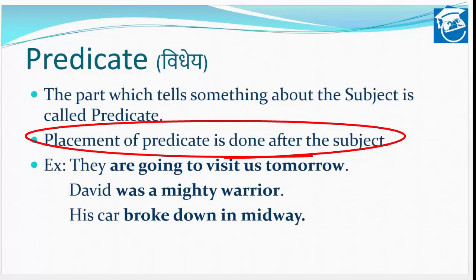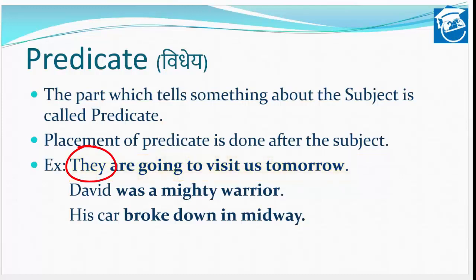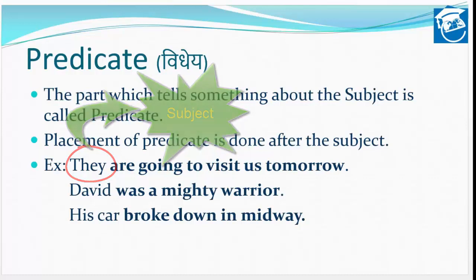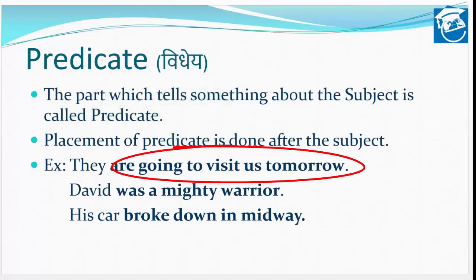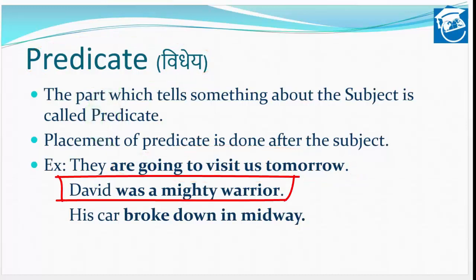Placement of predicate is done after the subject, aur 90% of the time jab bhi predicate lagaenge English ke sentence mein, use hum subject ke baad mein lagaate hain. Example: They are going to visit us tomorrow — ve kal hamse milne waale hain. 'They' yahaan humara subject hai, aur 'are going to visit us tomorrow' unke baare mein kya bata raha hai — yeh poora bhaag predicate ho jata hai.